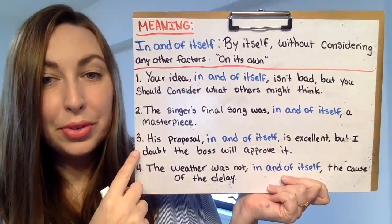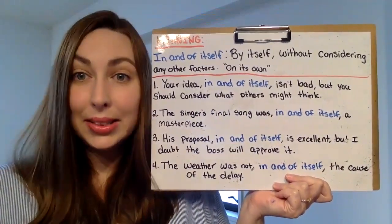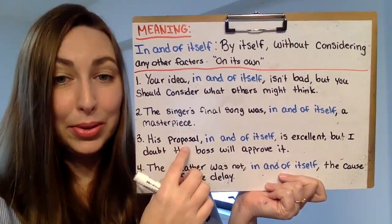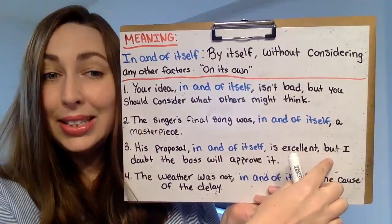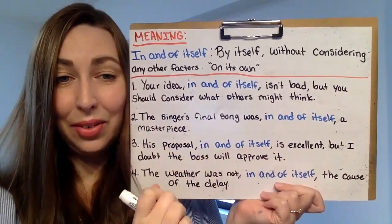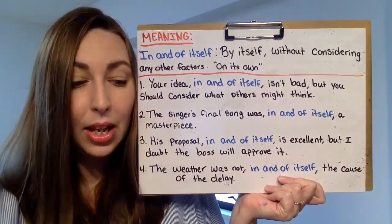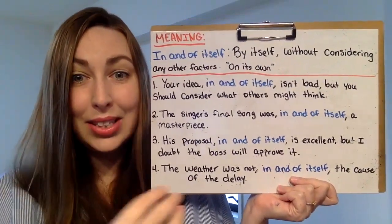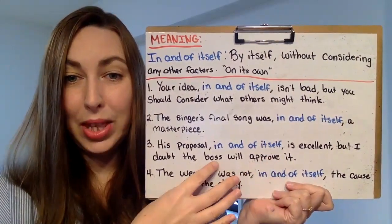Number three: 'His proposal, in and of itself, is excellent, but I doubt the boss will approve it.' So maybe you're having a meeting and you give a proposal to your team or your boss. His proposal by itself is excellent, but if we consider what the boss wants or thinks, maybe he might not approve it. There might be some problem with the boss. And 'doubt' means you don't think something will be how it should be — so even though his proposal was good, I don't think the boss will approve it.